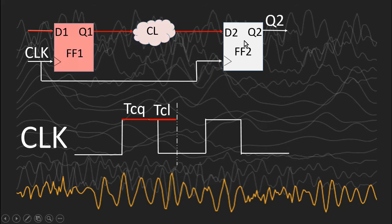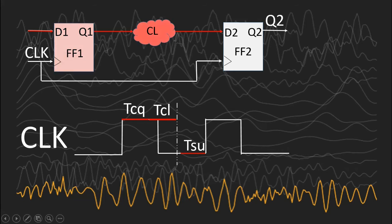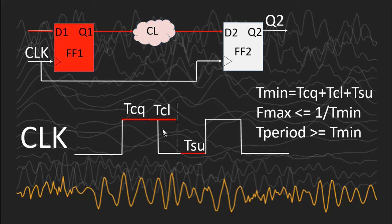Each flip-flop inside the digital design has some setup time requirement. Setup time is the time the input of the flip-flop should be stable for some minimum time before the active edge of the clock — the active edge here being the positive edge. Let us say the setup time of flip-flop 2 is T_SU. It is quite clear from the figure that if flip-flop 1 throws something on the nth active edge of the clock, it must be captured by flip-flop 2 on the n+1 active edge. From here we can easily derive the equation: the minimum time period of operation T_min equals T_CQ plus T_CL plus T_setup of the second flip-flop.